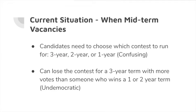So under our current situation, when there's a midterm vacancy — if someone can't fulfill the entire three years — that vacancy is put onto next year's ballot. So next year, there would be the usual four slots for a three-year term, and then an additional slot for a one or two-year term. That can be fairly confusing to new potential candidates. It also introduces opportunities for gamesmanship. Under current practice, you can lose a contest for a three-year term with more votes than someone who wins for a one or two-year term, or vice versa, which is undemocratic and doesn't reflect the will of the voters.